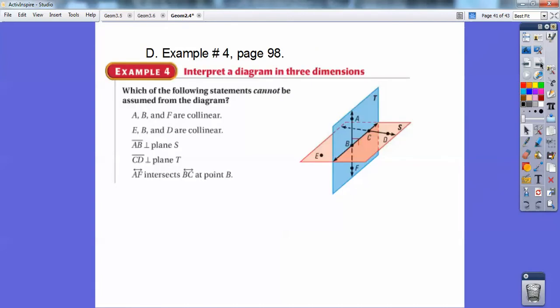All right, so this is example four on page 98 in our textbook. So which of the following statements cannot be assumed from the diagram? Let's take a look at this. It looks like I have plane S, plane T. I have some points and stuff. I have a right angle right here, so this right angle tells me, okay, plane A is going to be A, B, and F are collinear. A, B, and F, yep, they lie on the same line, so that one's true.